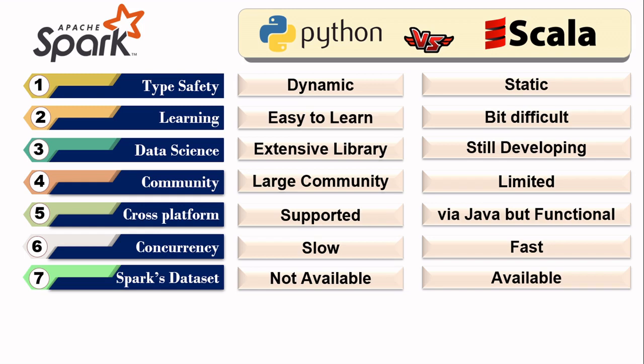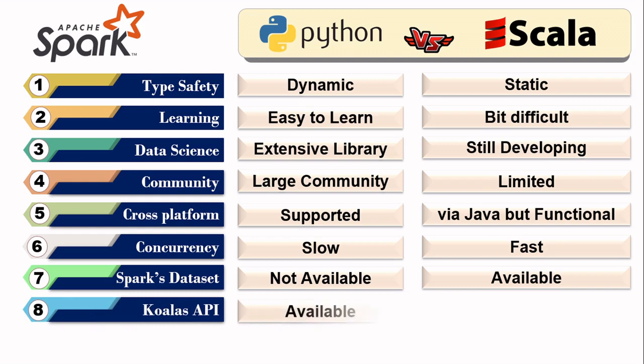Koalas is a powerful Python extension especially for data science and machine learning developers, allowing you to implement pandas algorithms in Apache Spark. Scala does not support Koalas.